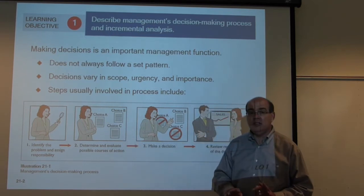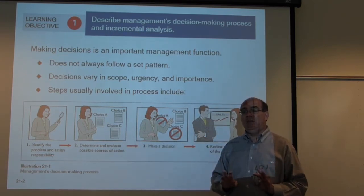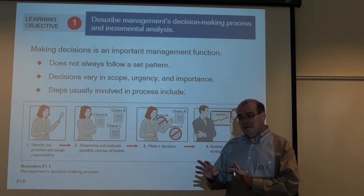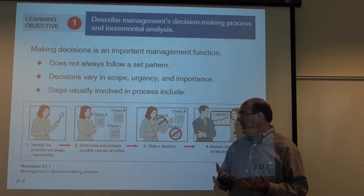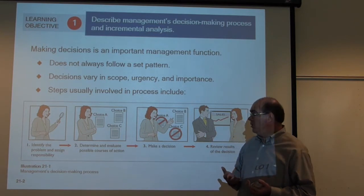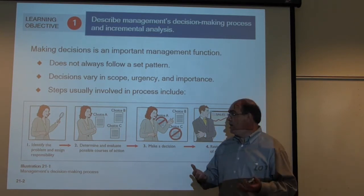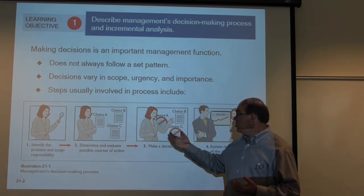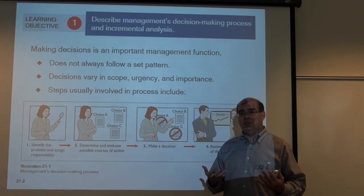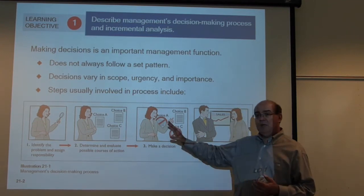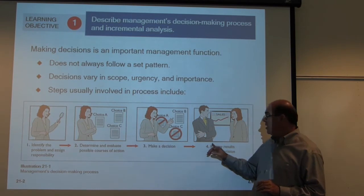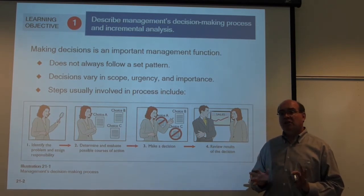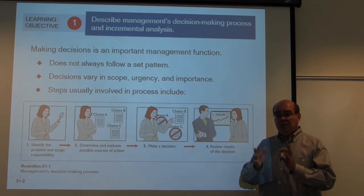The second step is to look at the different choices available and evaluate them. We want to measure either quantitatively with numbers or qualitatively, looking at the impact those changes might have — a pros and cons of the different choices. Then we rank the choices. The third step is to make a decision — we pick choice A, B, or C, whichever gives us the greatest benefits and fewest negatives. Then finally, a lot of companies stop there because you move on to the next crisis.